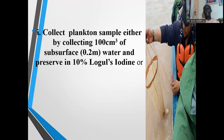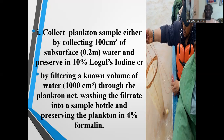The procedure for the collection of planktons: First, collect plankton samples either by collecting 100 cubic centimetres of surface water at approximately 0.2 metres depth and preserve in 10% Lugol's iodine. Alternatively, you can collect the plankton sample by filtering a known volume of water, usually 1000 cubic centimetres, through the plankton net, washing the filtrate into a sample bottle, and preserving the sample in 4% formalin.